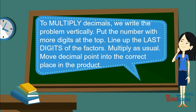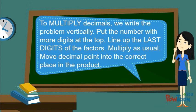To multiply decimals, we write the problem vertically and put the number with more digits at the top. We line up the last digits of the factors and multiply as usual. We move the decimal point into the correct place in the product.